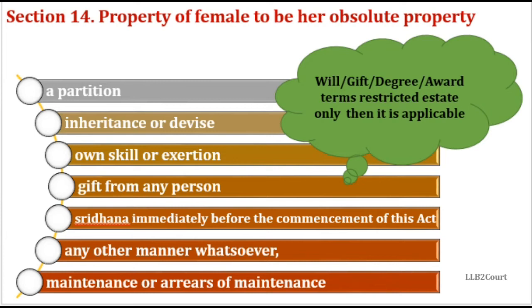There is another proviso in Section 14 subsection 2. It states that if there is any term mentioned in a grant, gift, decree, or award which states that only a restricted estate is applicable, then only that is applicable and not absolute property. For example, if the father makes a will to his daughter that she will hold the property as a life estate and after her death the children will take it as absolute owners — since it is mentioned in the will, that applies and not Section 14(1). If there is no will, gift, decree, or award specifying a restricted estate, only the absolute property will be possessed by the female.